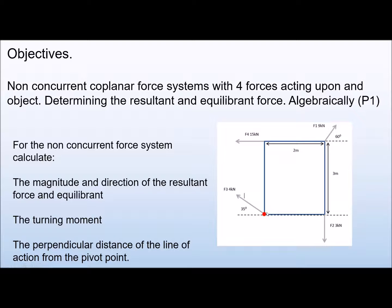Because this is a non-concurrent force system, we don't have a point of concurrency and we have a distance, so we have a moment. We need to calculate the total turning moment, and then using all that information we're going to calculate the perpendicular distance from the line of action to the pivot point — so how far the resultant and the equilibriant will move along the line of action from our pivot point.